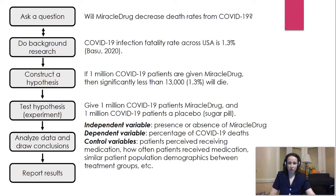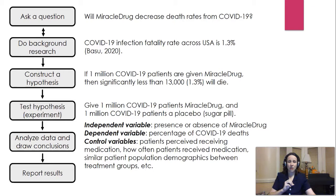By looking at the literature, I found a paper by Bozzo that stated COVID-19 infection fatality rates across the United States are around 1.3%. This gives me a baseline of what is occurring in the population, something I can compare back to in order to see if my drug is actually effective. So my hypothesis is: if I have a million COVID patients and they're given the drug, then I will see significantly fewer deaths — around 13,000 would be expected without the drug.